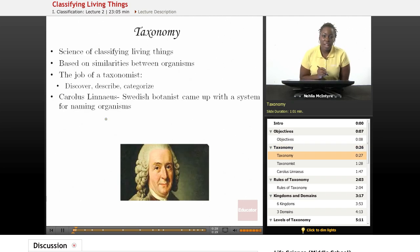Let's first talk about what taxonomy is. Taxonomy is the science of classifying living things. Based on similarities, the taxonomy is based on similarities between organisms.